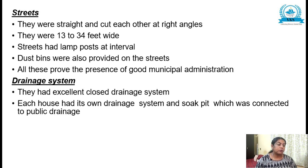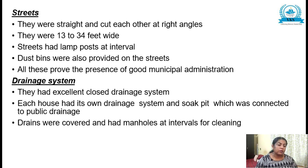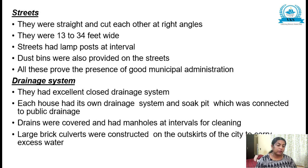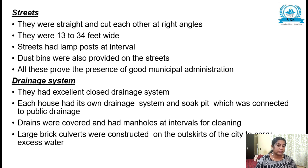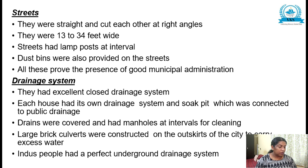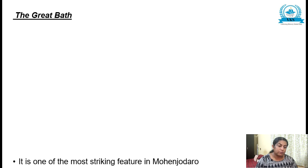The next subheading is drainage system. They had an excellent closed drainage system. Each house had its own drainage system and soakpit, connected to the public drainage. Drains were covered and had manholes at intervals for cleaning. Large brick culverts were constructed on the outskirts of the city to carry excess water. The Indus people had a perfect underground drainage system.